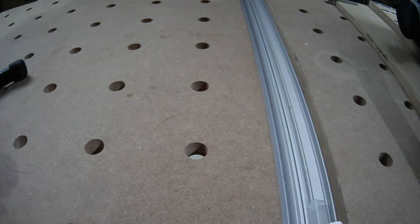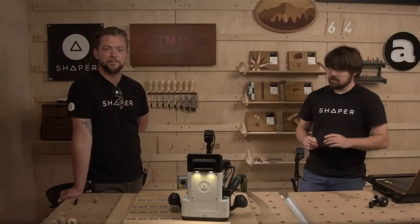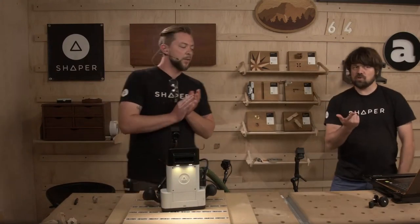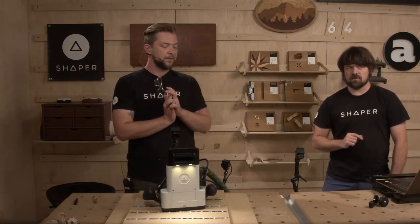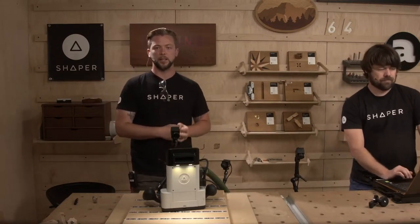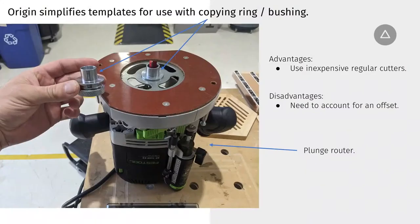Jake's going to walk you through the copying ring approach now with Origin. What's nice about these bushings is we know the exact dimension of them, so we can actually use Origin's onboard calculator to just input that information. When we make our template, we're sizing it accurately undersized so that when we move to our thicker material — we're going to be making a tabletop today — that's why we're talking about bringing in a beefier router for this kind of operation.